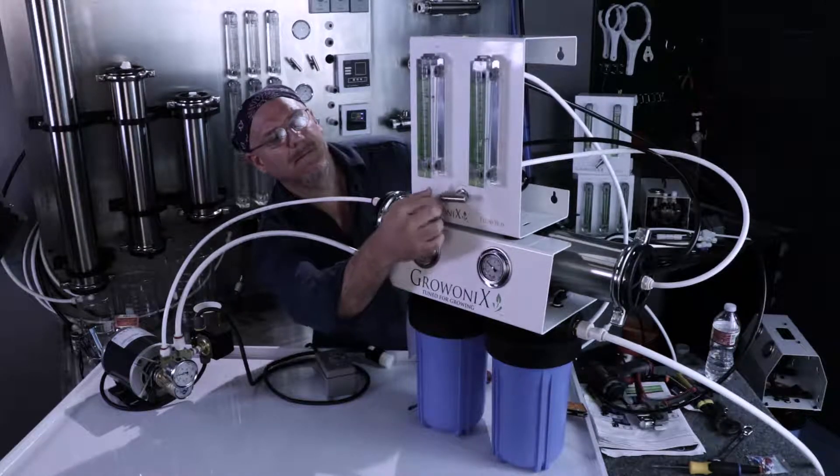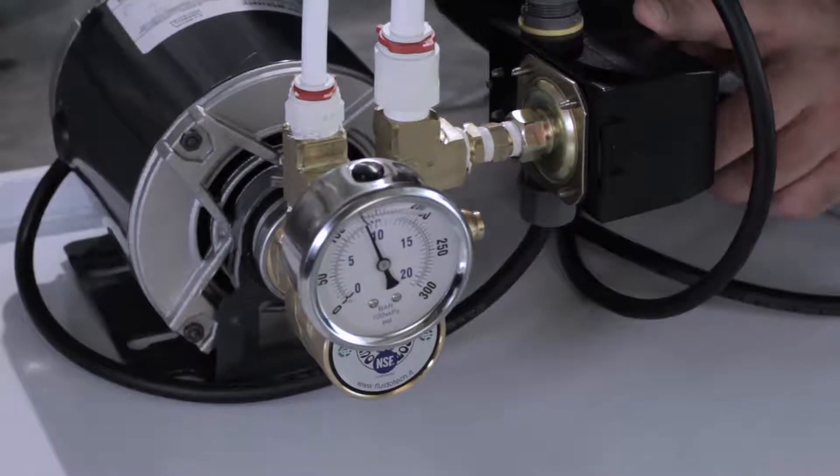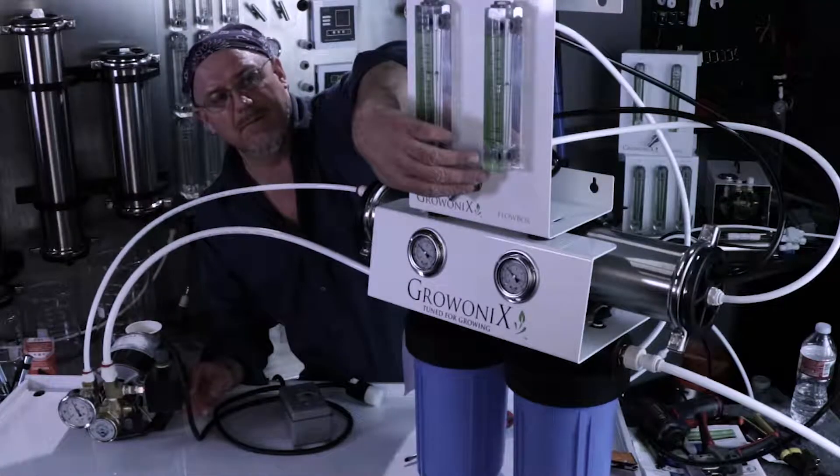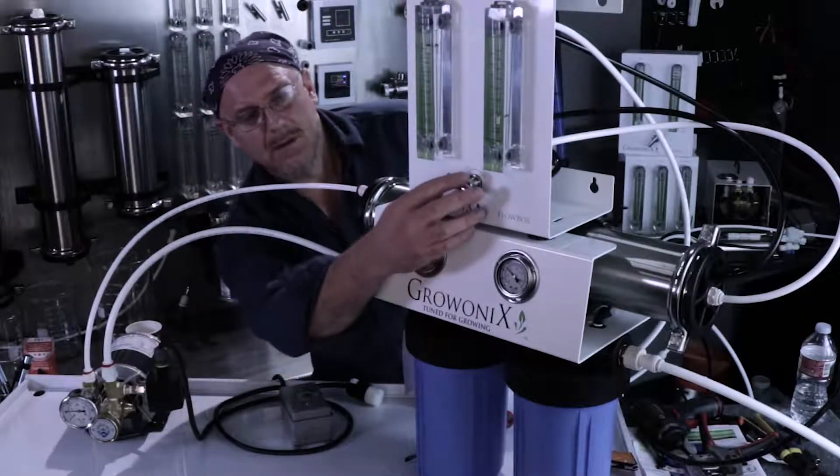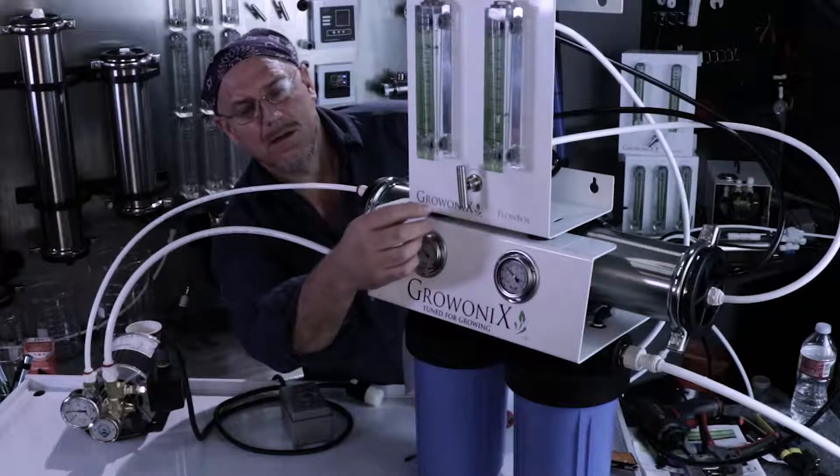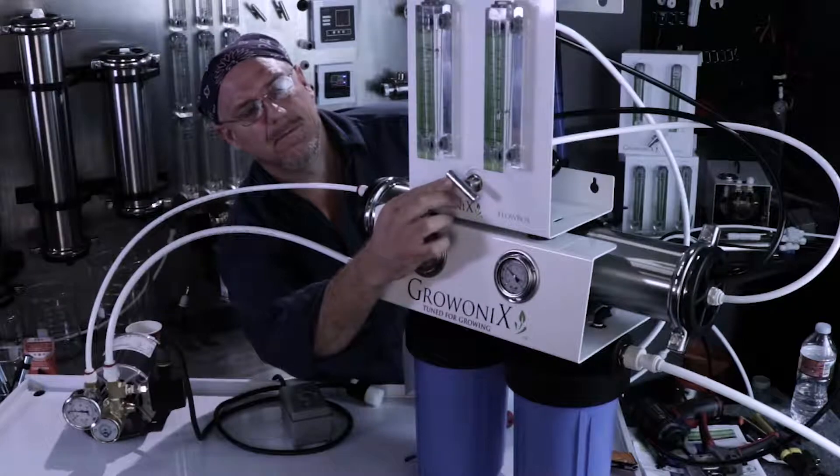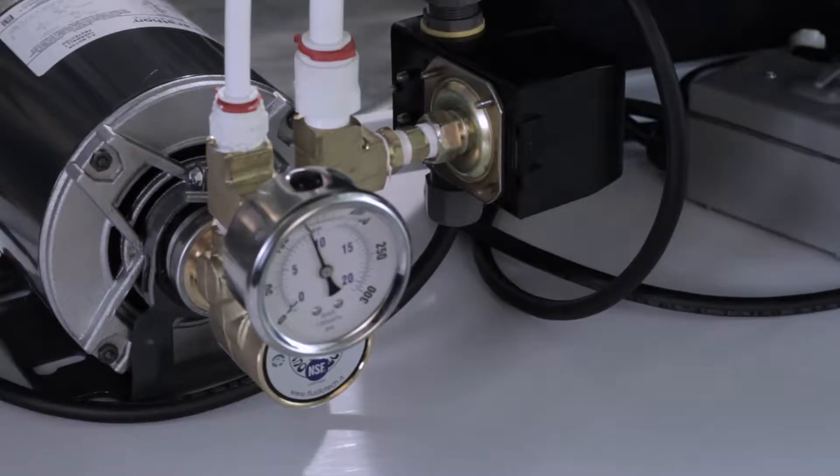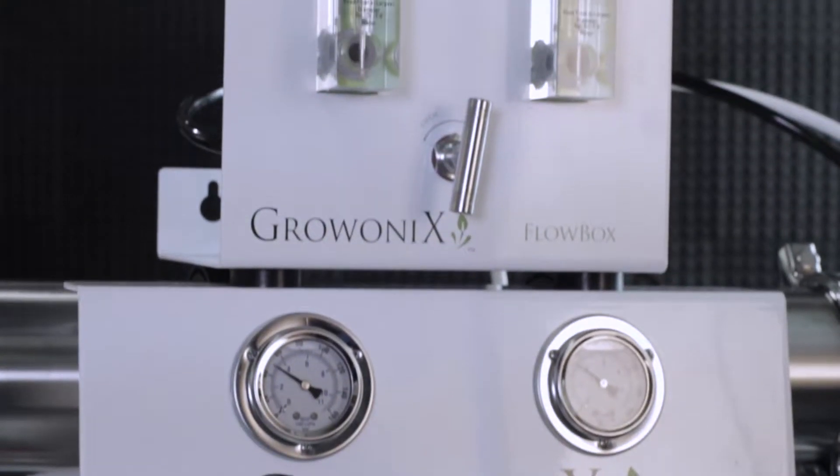One thing I want to show you: notice when you enter flush mode that the pressure on the gauge goes down. That's because more water is being allowed through the system, so the pressure goes down. When you go back to normal operation, the pressure will go back up. Every time you adjust your ratio to whatever you want to run this system at, one to one or two to one, you have to adjust your pump pressure accordingly.